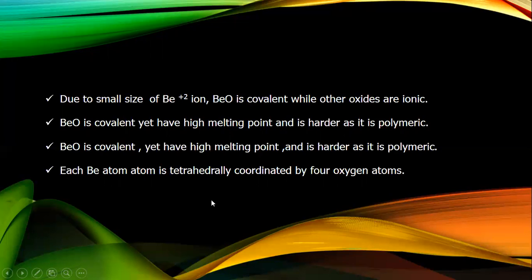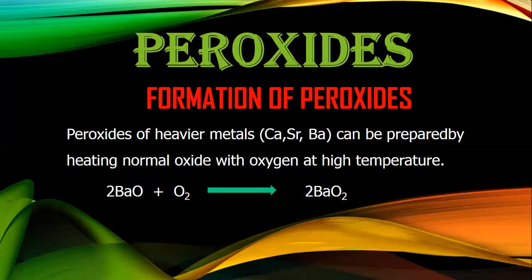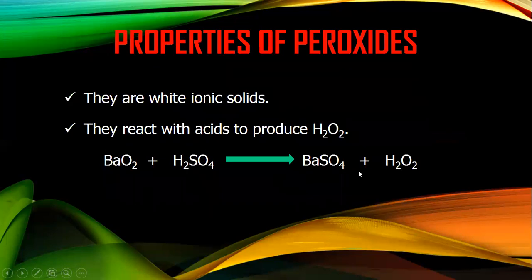The next are peroxides. Peroxides of heavier metals like calcium, strontium, and barium can be prepared by heating normal oxides with oxygen at high temperature — for example, barium oxide plus oxygen gives BaO2, which is a peroxide. Peroxides are white ionic solids and they react with sulfuric acid to give barium sulfate and H2O2.